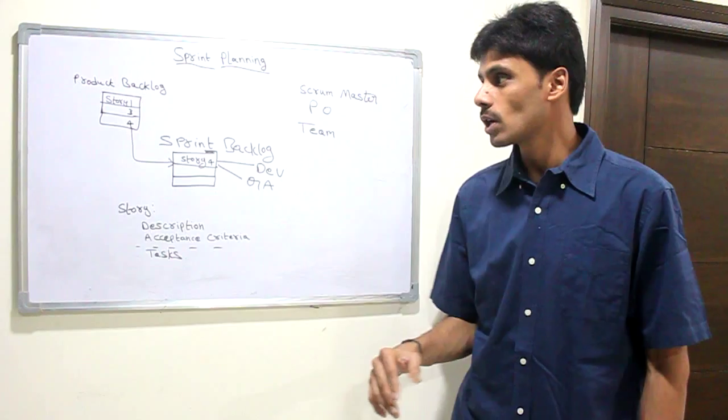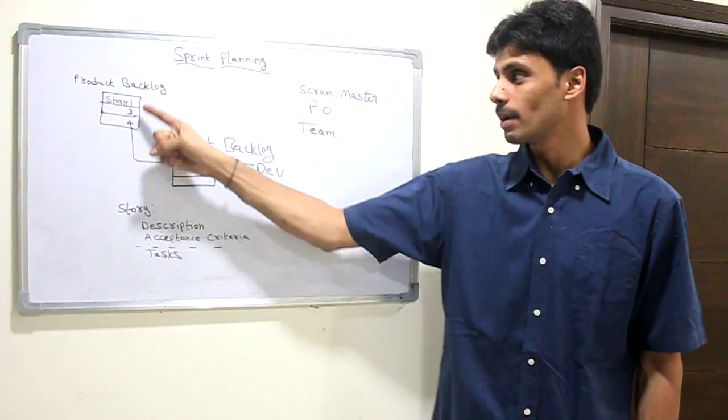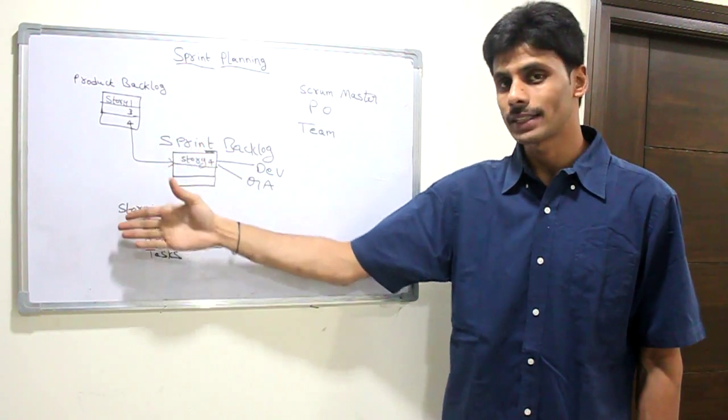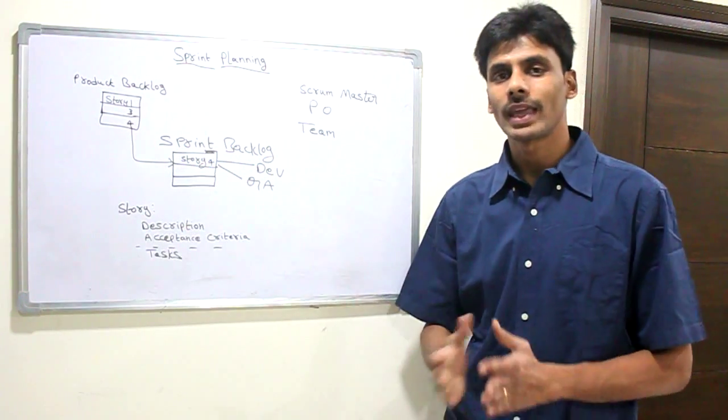Out of the product backlog which is already prioritized, we will pull some requirements or stories into the current sprint. For example, if I have story one, three, four, two, etc., for this sprint I might only pull in one or two stories depending on the capacity we have.